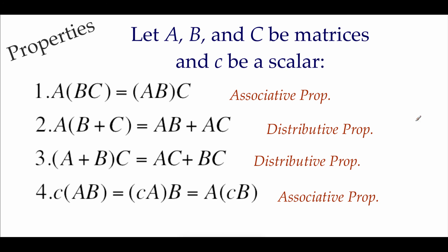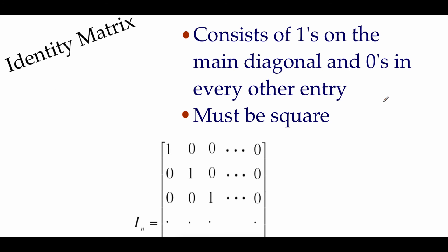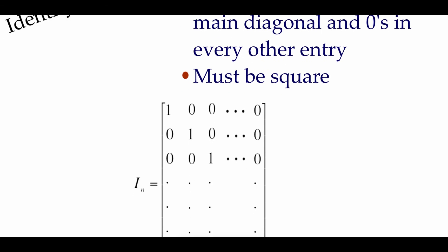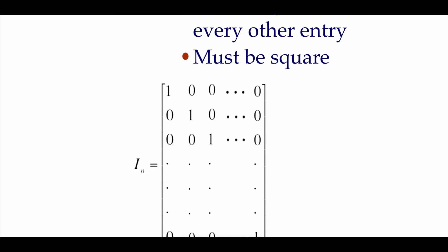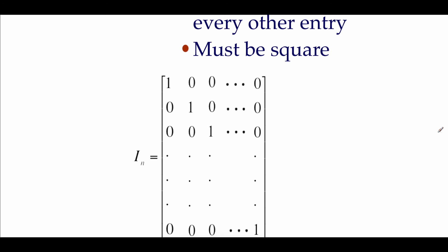There are different properties to look at with these operations. Capital A, B, and C represent matrices and lowercase c represents a scalar. We have an associative property for matrix multiplication, which means we can regroup things as needed. We also have a distributive property for matrix multiplication, which we can look at in a couple of different ways. And there's an associative property combining scalar multiplication with matrix multiplication.